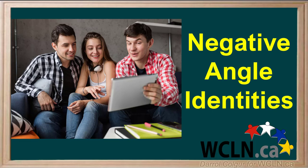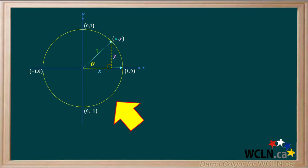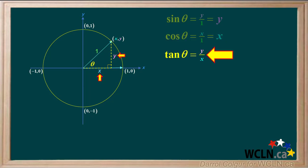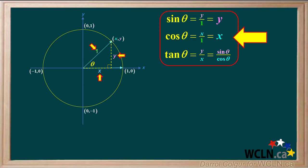There is a relationship between the basic trig functions for positive angle theta and negative angle theta. We'll explore these relationships using the unit circle. For positive angle theta: sine theta equals y over 1, which is equal to y. Cosine theta equals x over 1, which is equal to x. And tangent theta equals y over x, which also equals sine theta over cosine theta.